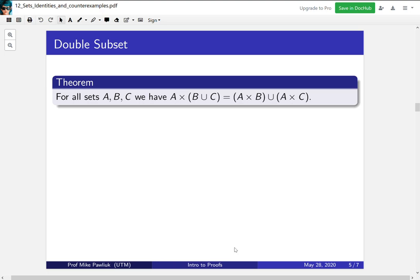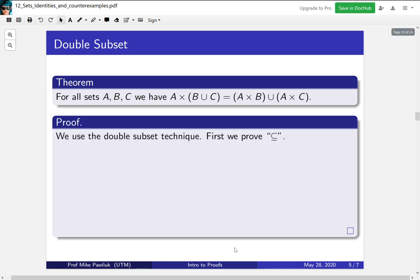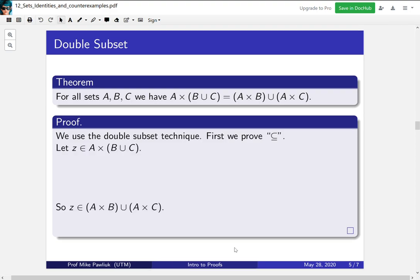Now, a proof of this will involve a double subset proof. We'll show that a set on the left is a subset of the set on the right, and vice versa. So we'll start by proving the first subset direction. This is going to be a definition unwinding proof. I'll write some stuff at the beginning, and I'll write where we're aiming for, and we'll slowly fill the gap.